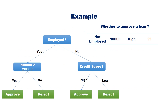Let us see an example. Assume that we have a new application and we have to classify whether it should be approved or rejected. Start with the root node. Based on the value of the test, go to the corresponding branch and continue doing this until you reach a leaf. The value of the leaf node is the predicted label for the new data.